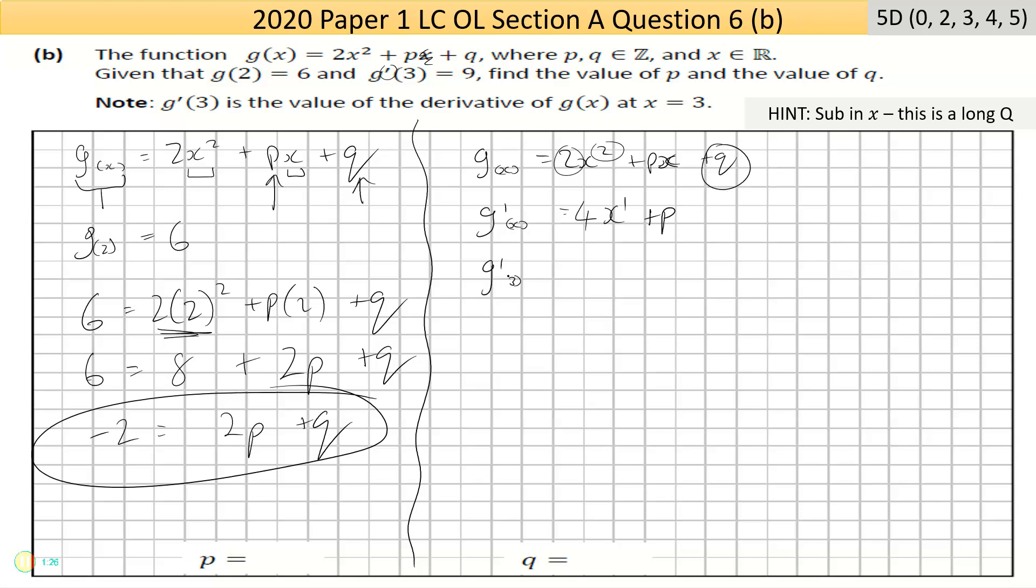We're also told that when you put 3 into the derivative, you get 9. So let's put 3 in: 4 × 3 + p = 9. If you've done this and you're going 'what do I do now?', remove brackets: 4 × 3 is 12 + p. Bring the 12 across, becomes minus: 9 - 12 is -3, that equals p. So you've found one of the two things you're asked for, you found p.